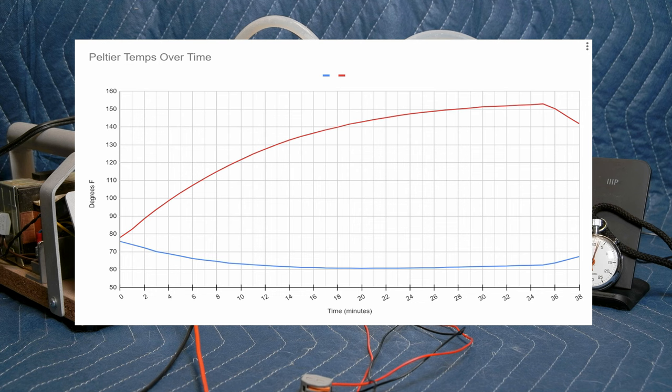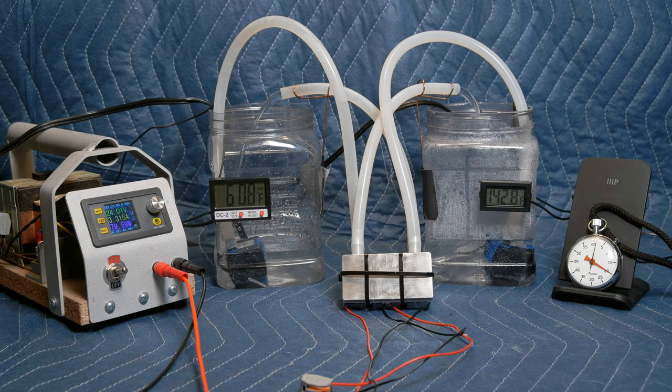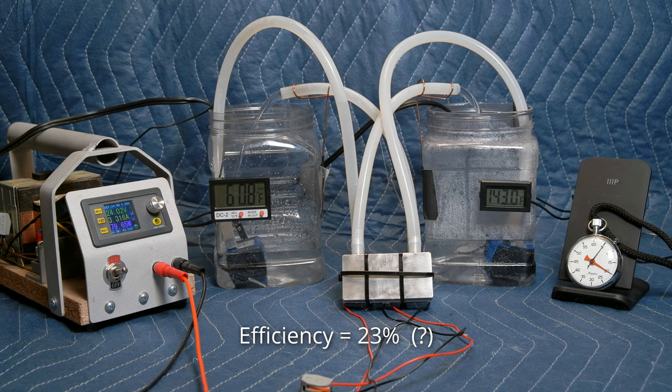At about the 20-minute mark, before the cool side started warming up, the cool side dropped exactly 15 degrees from its baseline, while the hot side gained almost 64 degrees, meaning the Peltier devices were showing an efficiency of about 23%. I'm simply dividing 15 by 64 to get that number.